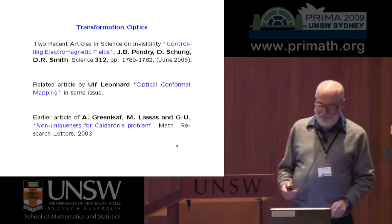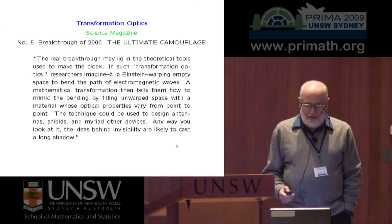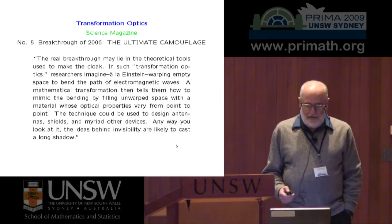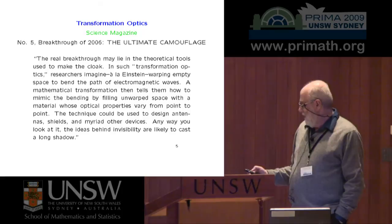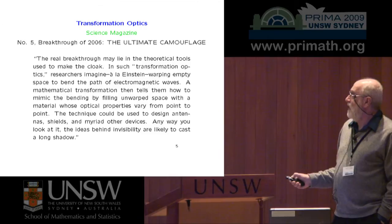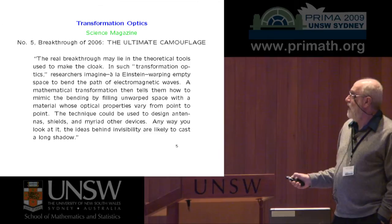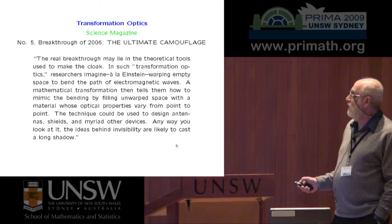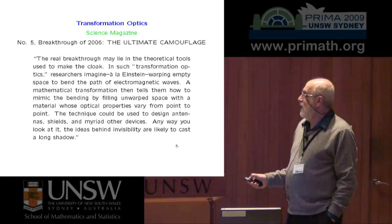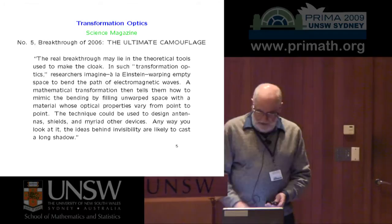Transformation optics became very fashionable. Science called it the number five breakthrough of 2006: 'Transformation optics, the ultimate camouflage.' They gave a very good description: researchers imagine Einstein warping empty space to bend the path of electromagnetic waves. A mathematical transformation tells them how to mimic the bending by filling unwrapped space with a material whose optical properties vary from point to point.